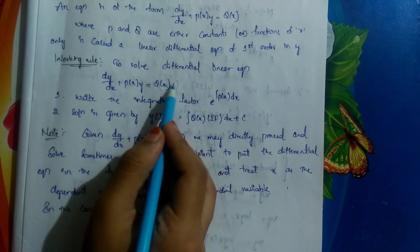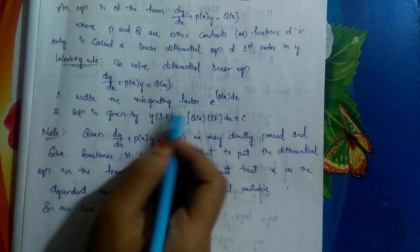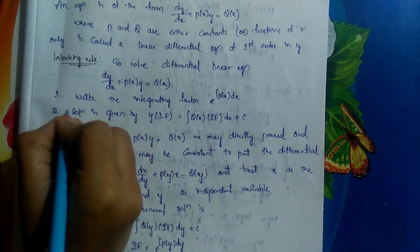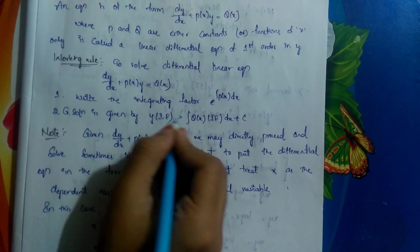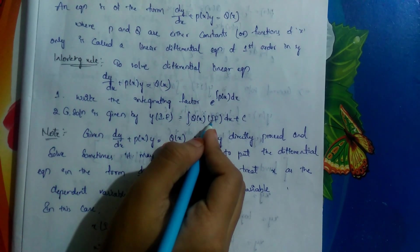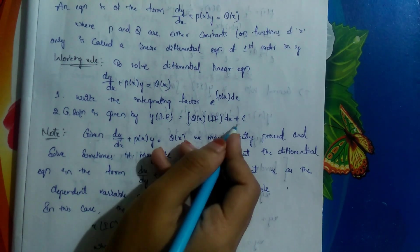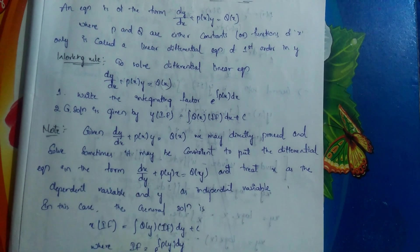After finding the integrating factor, we find the general solution, which is: y times the integrating factor equals the integral of Q(x) times the integrating factor dx, plus c. This is the general solution for the given linear differential equation.